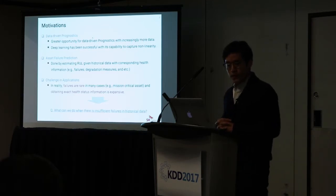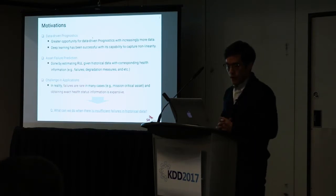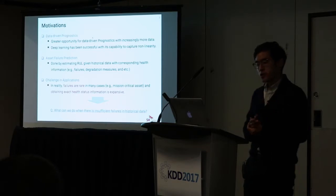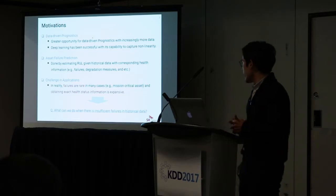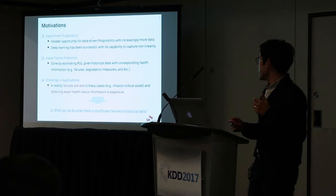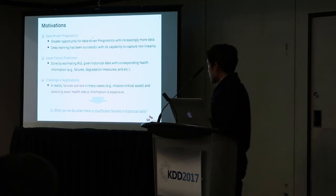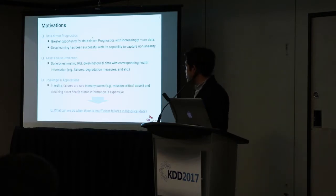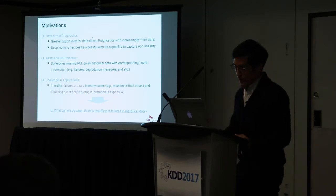One of the biggest challenges on the application side is the lack of failure data. As was pointed out, we don't have many failure data points. In reality, failures are rare in many cases, especially for mission-critical assets. Obtaining exact health status information is very expensive. So the question is: what can we do when there is insufficient labeled failure data in historical data?